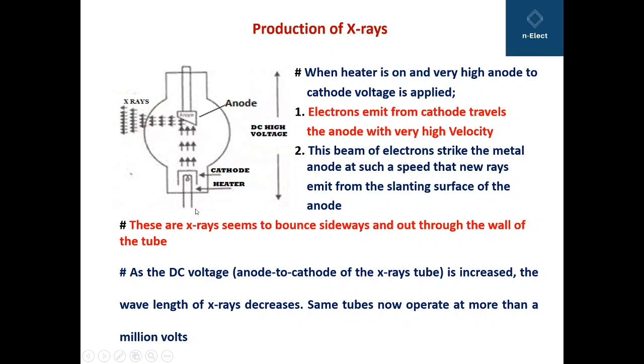When the heater is on, this is the heater element, and when it is made on and very high anode to cathode voltage is applied, electrons emit from the cathode and travel to the anode with very high velocity.